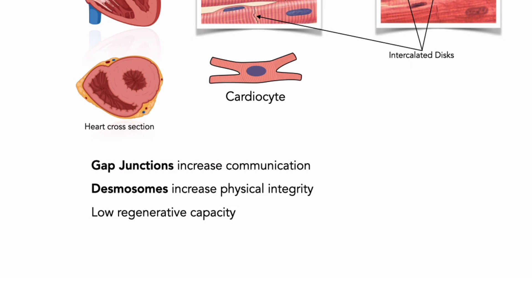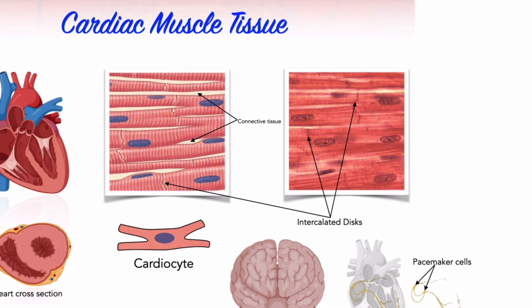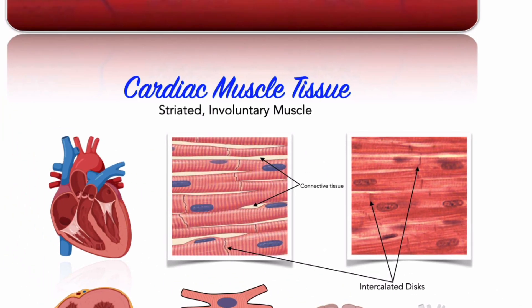While there is extensive innervation of the heart, cardiac muscle cells do not rely on nerve activity to initiate contractions. Instead, specialized pacemaker cells establish a regular rate of contraction. The nervous system can alter the rate of pacemaker activity, but it does not provide voluntary control over individual cardiocytes. Therefore, we call cardiac muscle tissue striated, involuntary muscle.